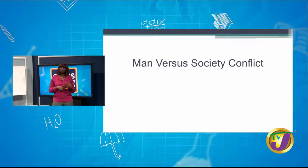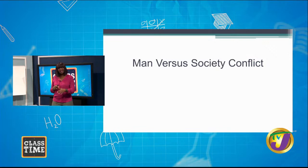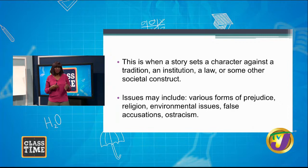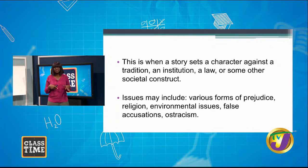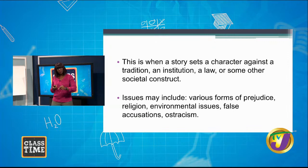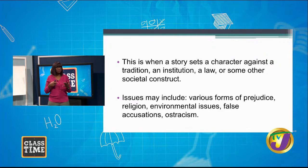Another type of conflict: man versus society. The story sets the character against a group of people who represent a tradition, an institution, a law, or any other construct of society itself. They're not up against any one individual — they're up against a system. This system can be religious, moral, economic, or any type at all.